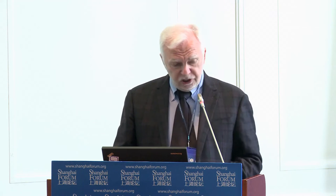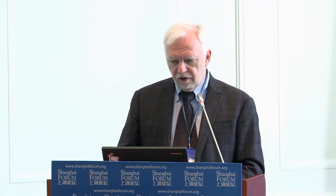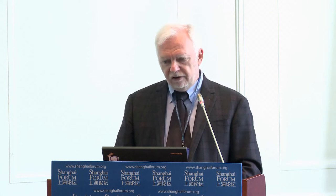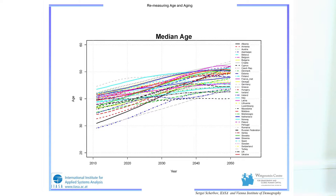How does population ageing look according to this traditional definition? From our projections for Europe, the proportion aged 65 plus changes dramatically — in 50 years, the darkest areas reach up to 63% of the population aged 65 plus. Similarly, median age grows in all countries, rising above 50 in some, meaning half the population would be older than 50.